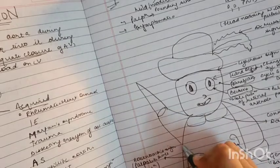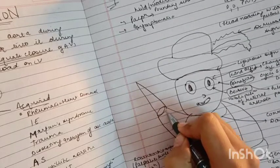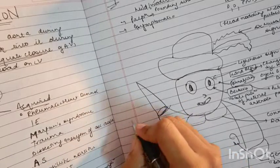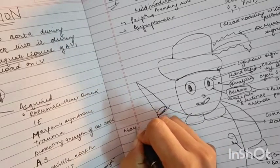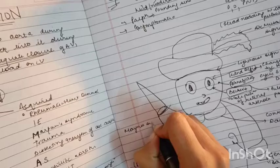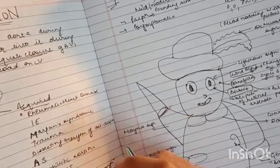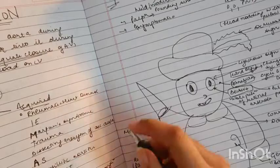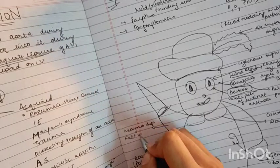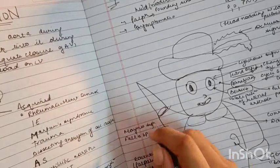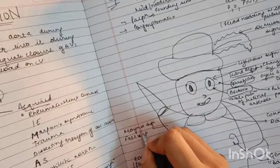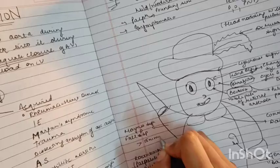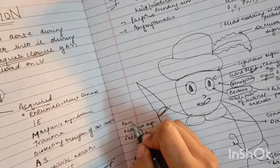Then since we can see that this person has a raised arm, this must remind us of Mayne's sign. What happens is that when a person raises their hand, the fall in the diastolic blood pressure is more than 15 mm while raising hand.